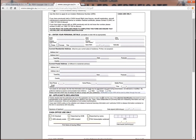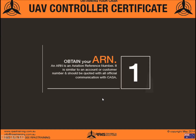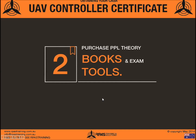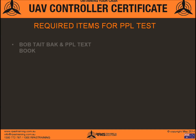Get your ARN done as soon as possible, because you'll need it for booking your exam and all your upcoming paperwork. Once you've applied for your ARN, we're on to Step 2: purchase the PPL theory books and exam tools. You'll need study material — we recommend the Bob Tate BAK and PPL textbooks. You'll also need a ruler and plotter for navigation calculations, a PCA chart covering areas around Australia useful for meteorology and aviation forecasts.